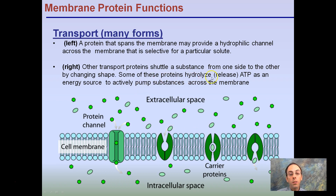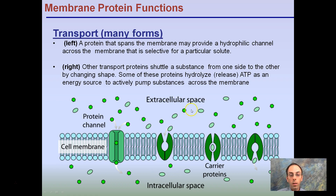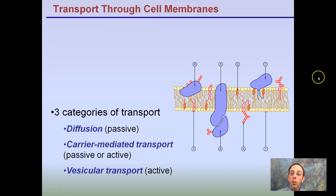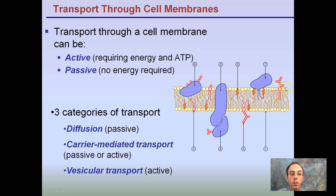Some of these proteins hydrolyze ATP as an energy source to actively pump substances across the membrane. Certain protein channels just passively allow transport to happen, while others require ATP for transporting molecules. The larger, lighter green oval-shaped molecules require a different protein to move across the membrane than the small green ones. There are three categories of transport: diffusion, carrier-mediated, or vesicle transport.